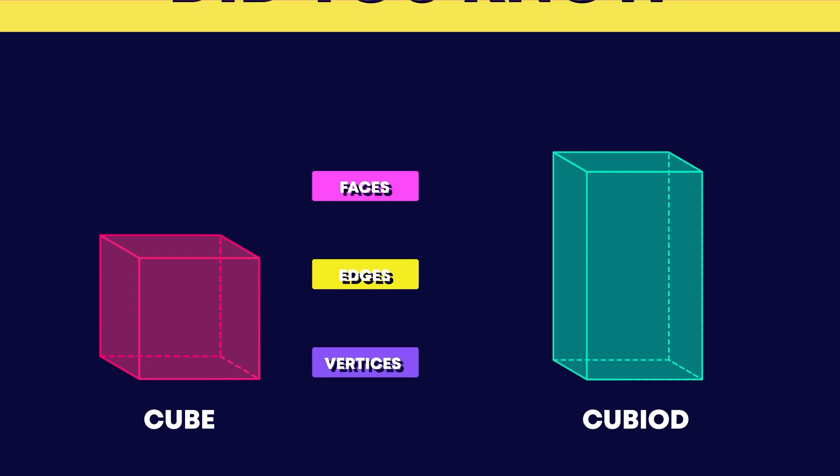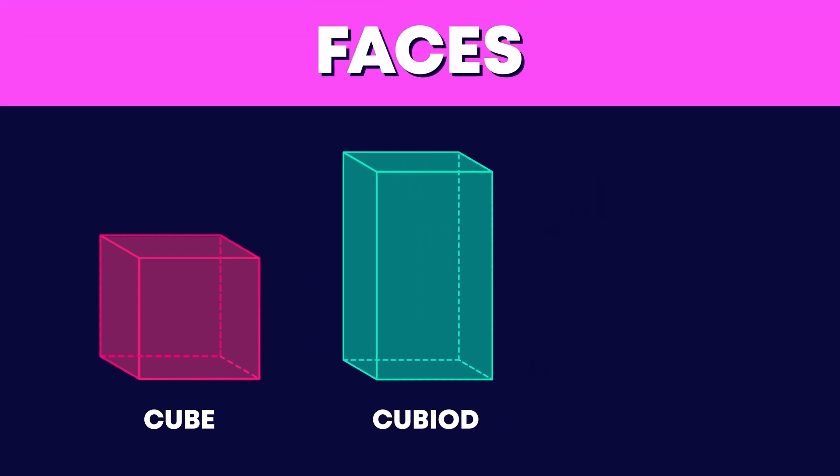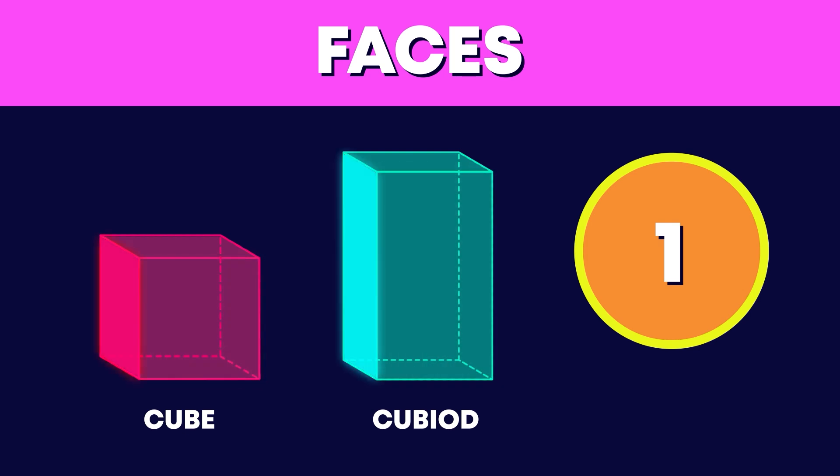Let's count how many faces both cubes and cuboids have. 1, 2, 3, 4, 5, 6.